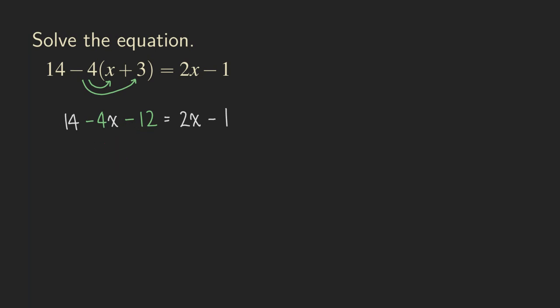That would give us 2, right? So we are going to get 2. And then we are just going to copy down this negative 4x here, so we are going to get negative 4x. And that's equal to 2x minus 1.